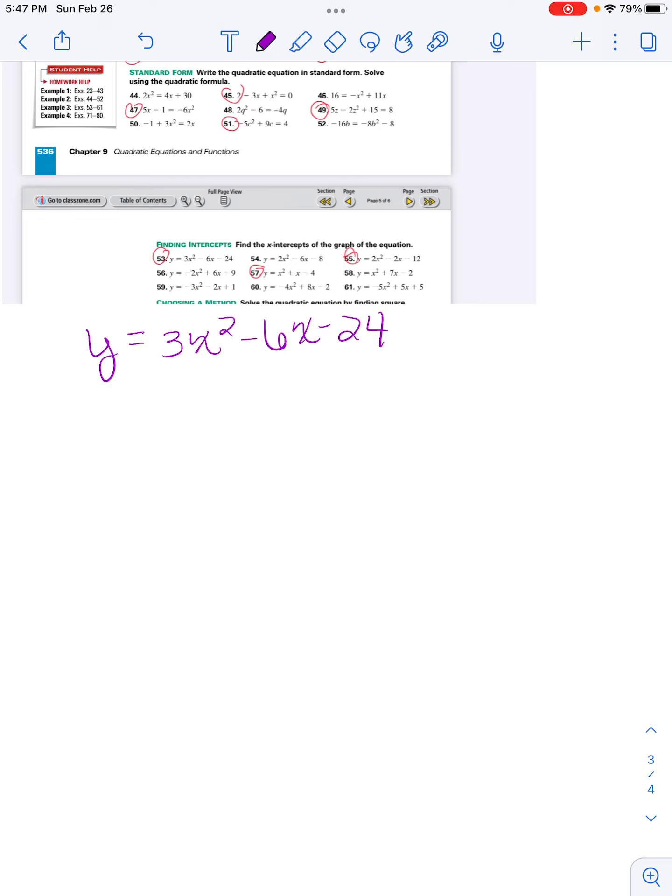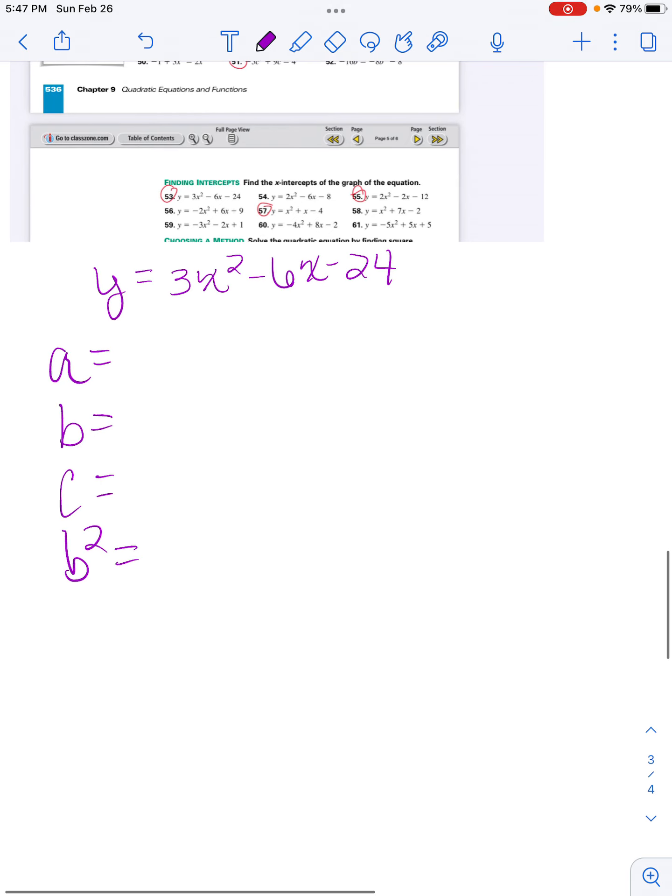What I'm first going to do is my quadratic. So I'm going to do my a equals, b equals, c equals, b squared equals, and 2a. So then, 3 is my a, negative 6, negative 24, b squared is 36, 2 times a is 6.